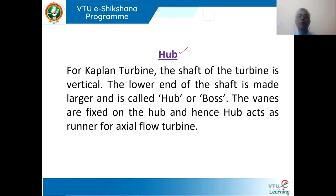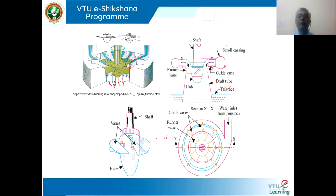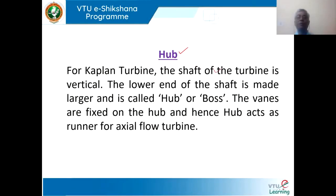Next is the hub. The hub is what you can see here — this is called the hub. For this hub, the runner is being attached. The hub is in a conical shape. For the shaft, the hub is connected. The shaft of the turbine is vertical. The lower end of the shaft is made of a larger diameter hub or boss. The vanes are fixed to the hub, and hence the hub acts as a runner for the axial flow turbine.